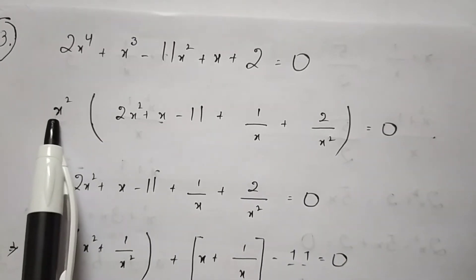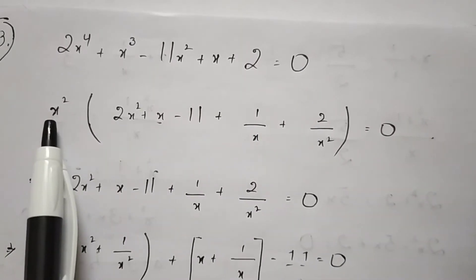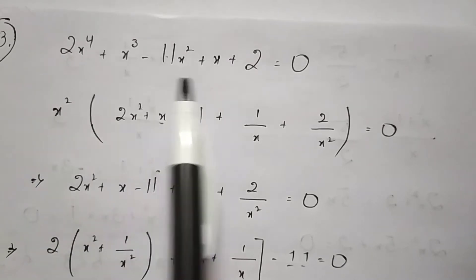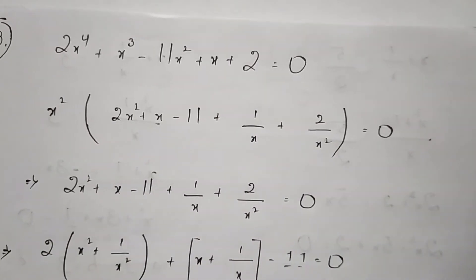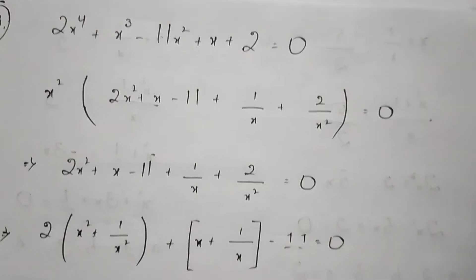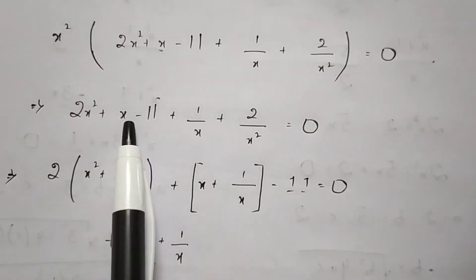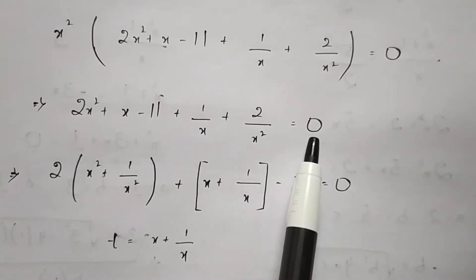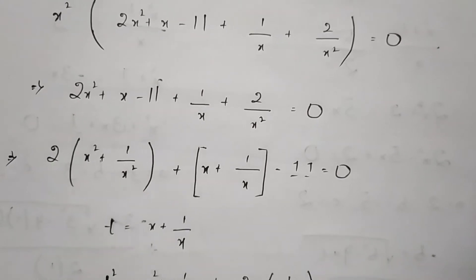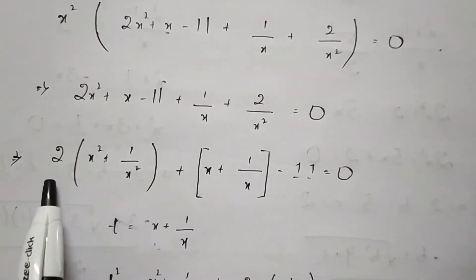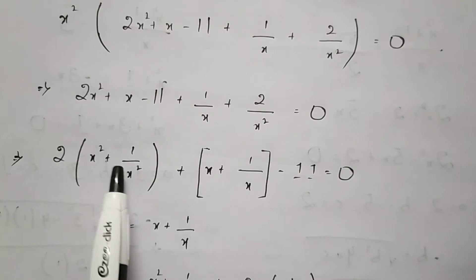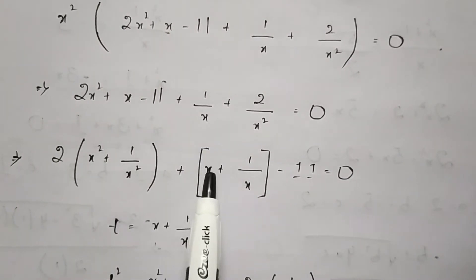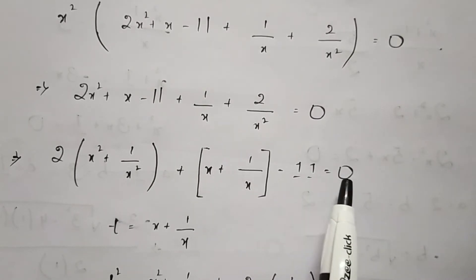We send the value of x² to the RHS side. When we send x² to the RHS side, this will become 0. Therefore, the equation we got is x² + x - 11 + 1/x + 2/x² = 0. From the first and last terms, we take 2 common to get 2(x² + 1/x²). From the middle terms, we write x + 1/x - 11 = 0.